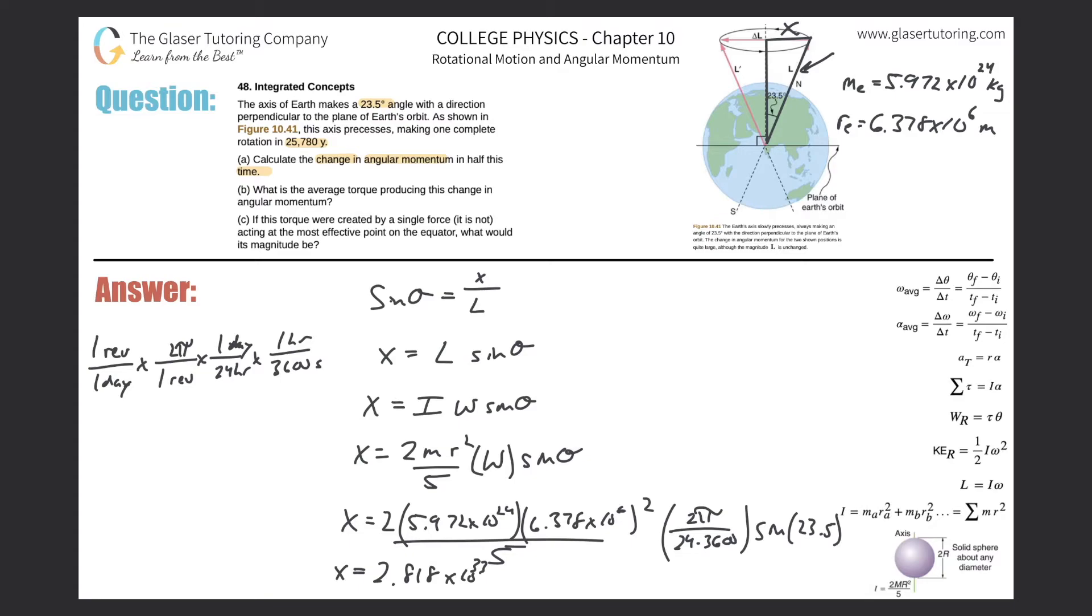So throw this all into the calculator. So we got two times 5.972 times 10 to the 24th times 6.378 times 10 to the sixth squared, divide that by five. And then let's take that multiply it by now, two pi, all divided by 24 times 3600. And then that result multiplied by sine of 23.5. And that would be our x value now. It comes out to be about 2.817. So that's x. So 2.818 or so times 10 to the 33rd. And now, we don't want to know the x, we want to know the full delta L up here. So we just have to take this value and multiply it by two. Easy peasy here. So just take that, multiply it by two. And now we're going to have our delta L value. So it comes out to be about 5.64 or so. 5.64 times 10 raised to the 33rd. So now this is units, kilogram, meter squared per second.